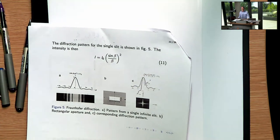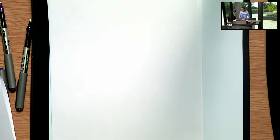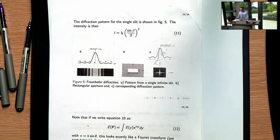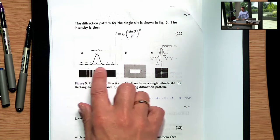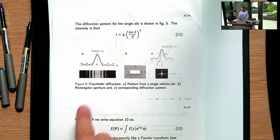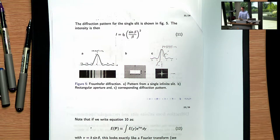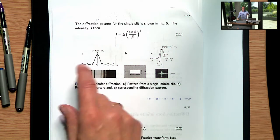We've seen in the last video that the diffraction integral for a slit — and indeed any diffraction integral — can be written as a Fourier transform of the aperture function. To recap: if you have a slit in one dimension, you get a sinc-squared intensity pattern, as seen here in this photograph, which looks very much like the experiment I've just shown you.